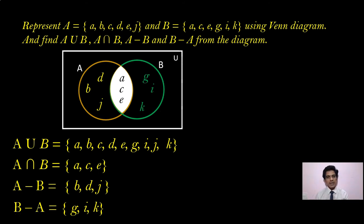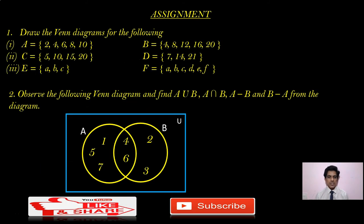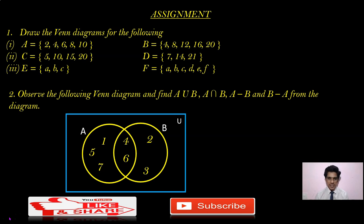This is your assignment for today. I have given two problems: first, draw a Venn Diagram as instructed; second, by observing a given Venn Diagram, write A union B, A intersection B, A minus B, and B minus A. I hope you understood this well. This is a very important and very simple concept in Sets. Thank you so much.